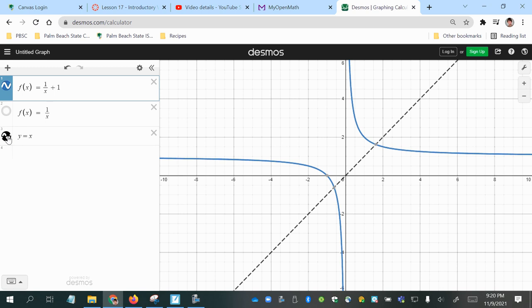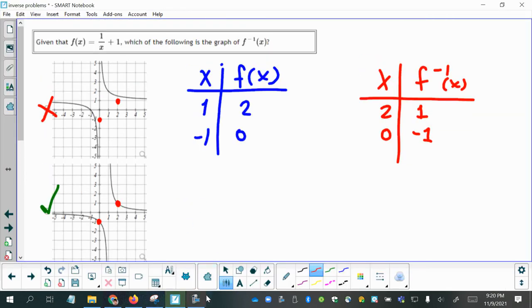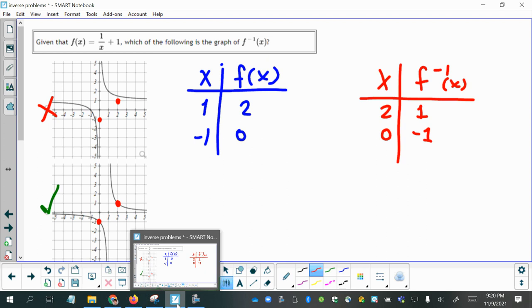Now here is the y equals x identity line. And if we reflect across that line, we will have our reciprocal function. So we had, let's look at some of these pairs on here. We had 1, 2, and negative 1, 0.